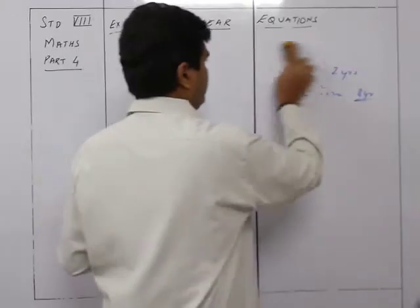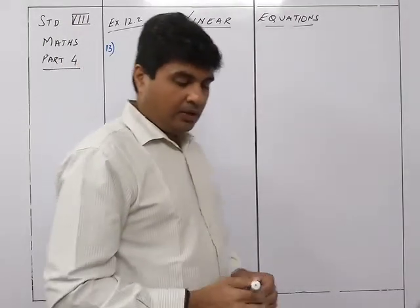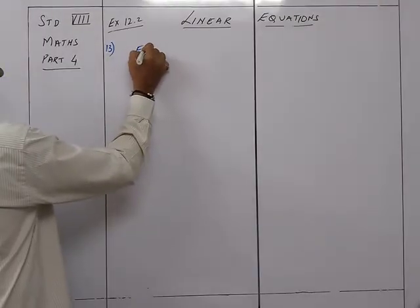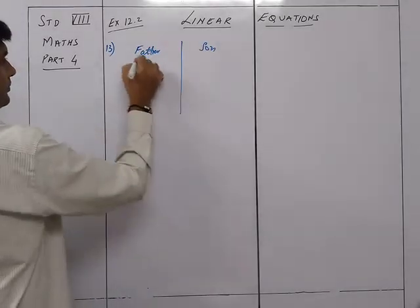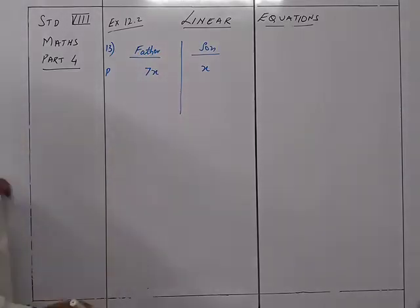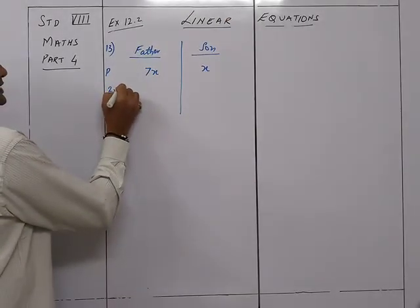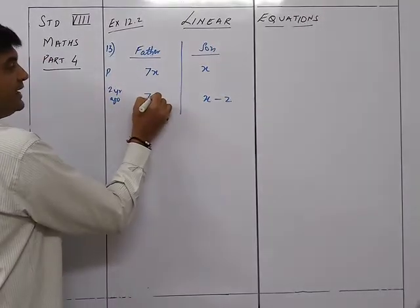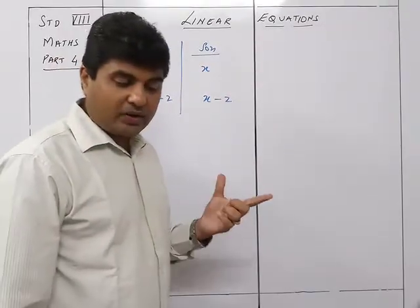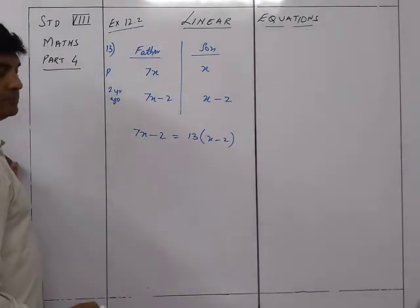Sum 13: A father is seven times as old as his son. Two years ago the father was thirteen times as old as the son. We set up the table: present ages — if son is x, father is 7x. Two years ago: son was x minus 2, father was 7x minus 2. The condition is 7x minus 2 = 13(x minus 2).